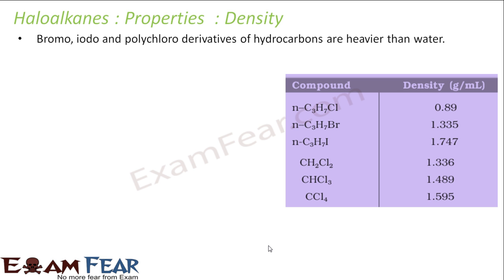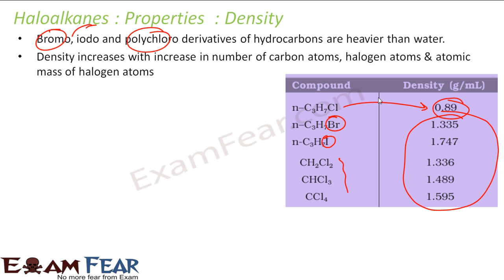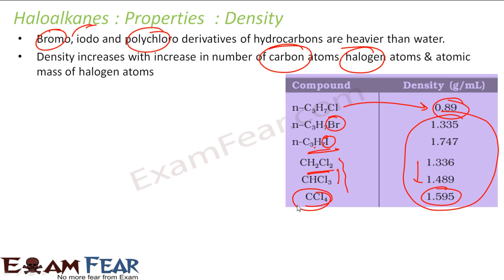Now for density of haloalkanes: bromo, iodo, and polychloro compounds have a density greater than water (greater than 1), but mono-chloro haloalkanes have a density less than one — they are lighter than water. Density increases with the number of carbon atoms, halogen atoms, and atomic mass. For example, C3H7I is denser than CH2Cl2, and CCl4 has the highest density among a series because it has the highest molecular mass.